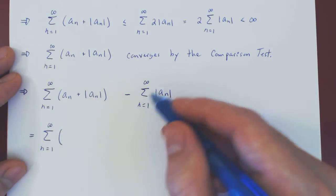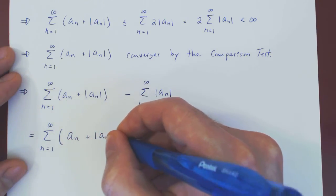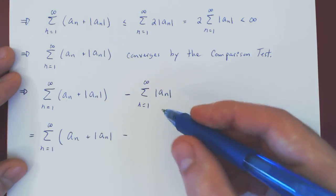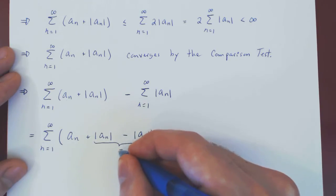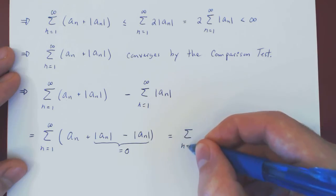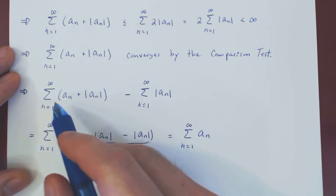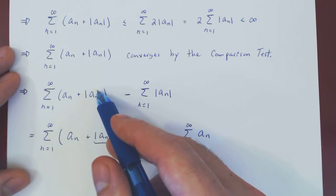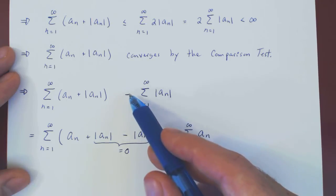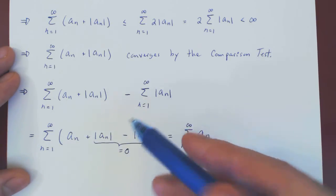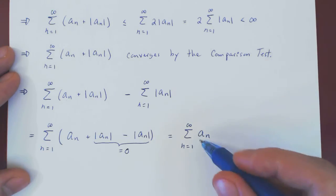So this will be the series of (aₙ + |aₙ|) minus |aₙ|, which simplifies to aₙ for any n. So you're left with the series of aₙ. This is a convergent series — therefore nothing but a real number — minus another convergent series — therefore nothing but a real number. A real number minus a real number gives a real number, therefore the series of aₙ is a real number, and therefore it must converge.